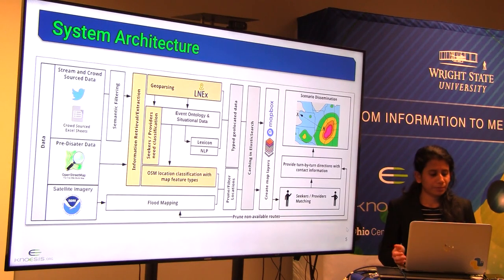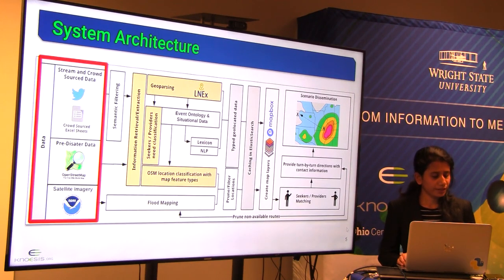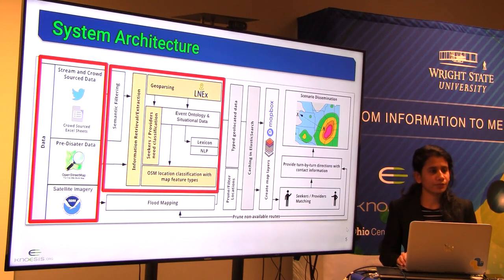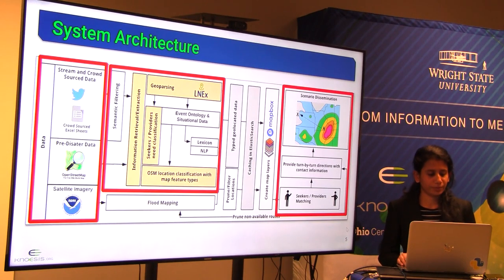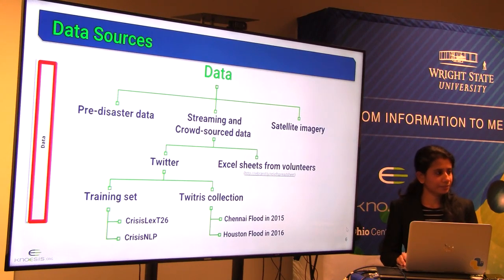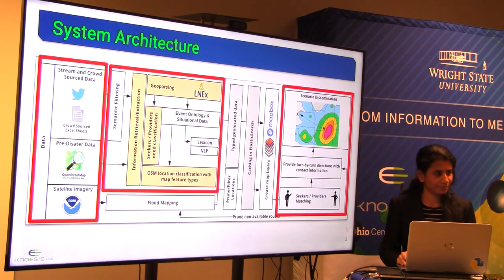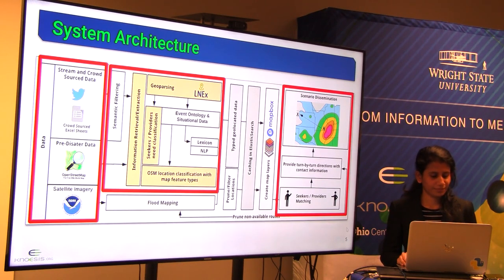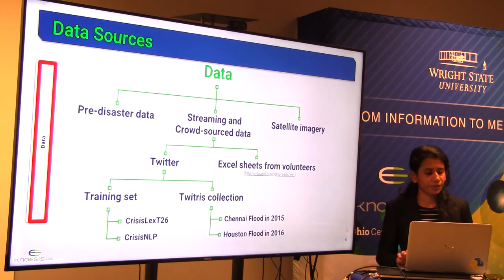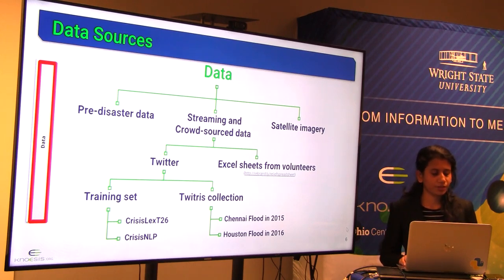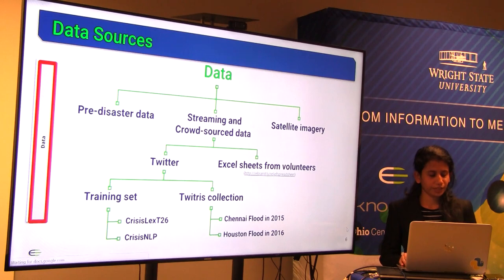The system architecture of the pipeline consists of three major contributions: the multimodal data coming from various sources, the location-specific functionalities, and the decision support need matching. The three kinds of data we are using are pre-disaster data, streaming and crowdsourced data, and satellite imagery.